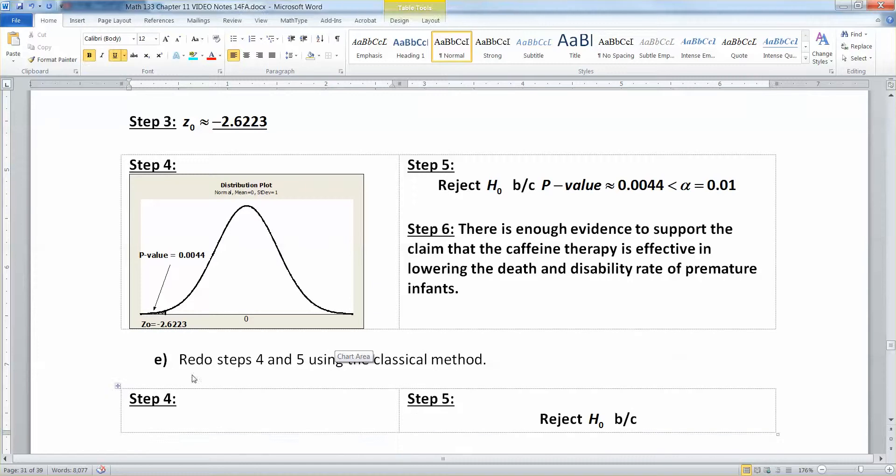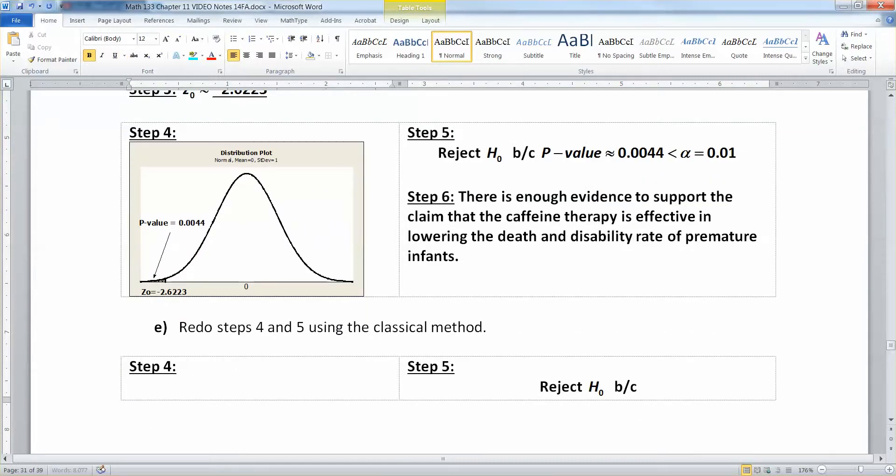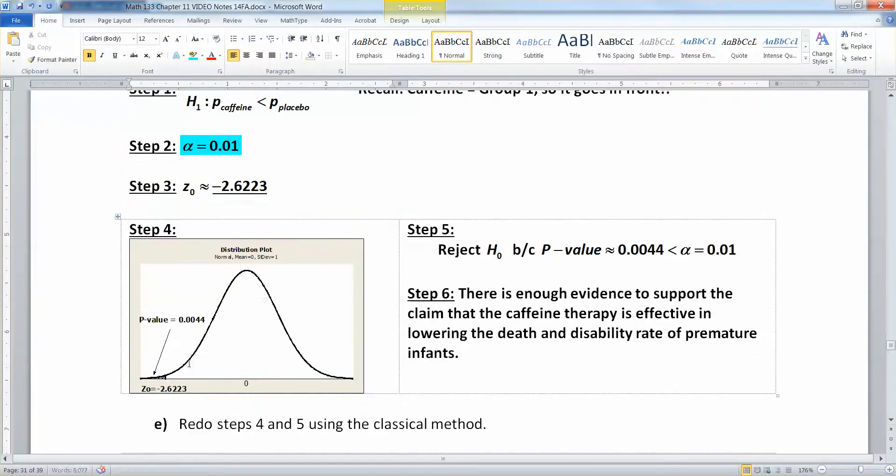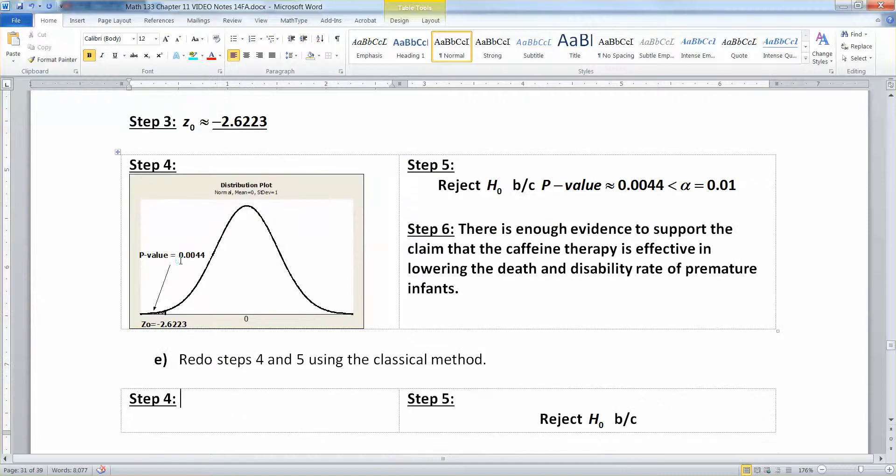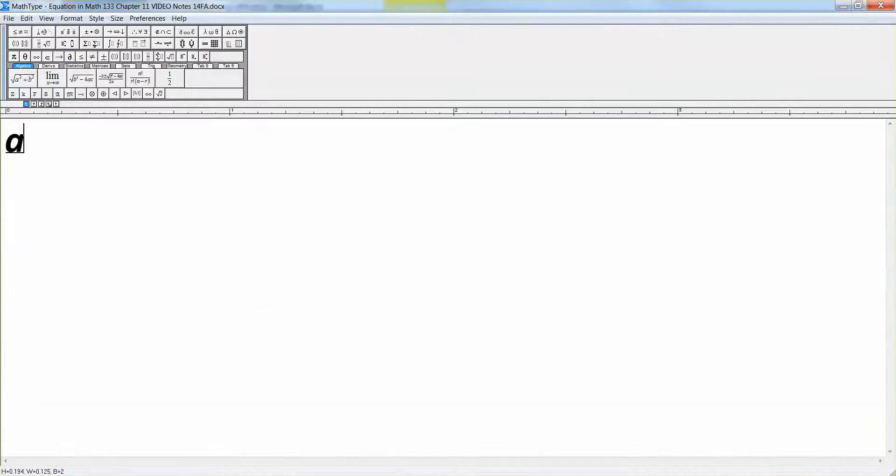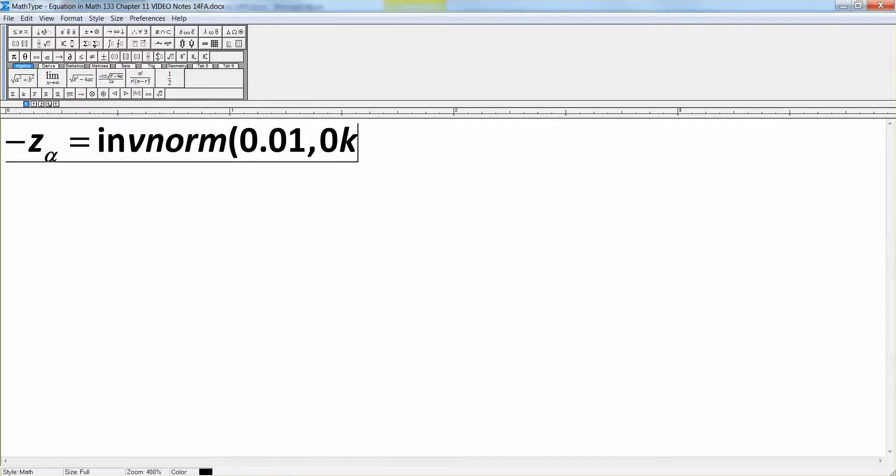So let's see here. Alpha, if you remember, was 0.01. So to find Z alpha, Z alpha, actually it's negative Z alpha. It's the inverse norm of 0.01 comma 0 comma 1. Oh my goodness, I can't type. There we go.